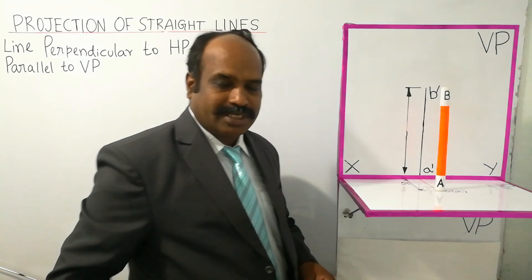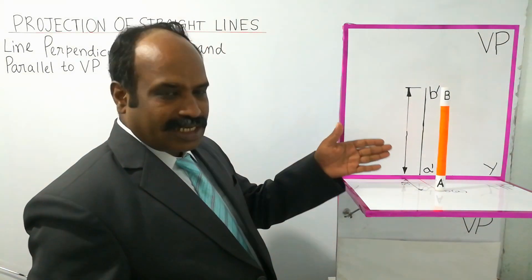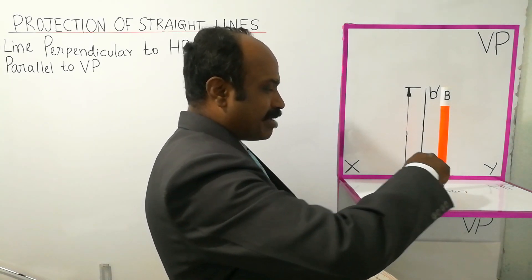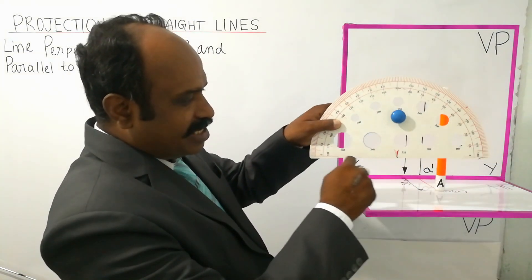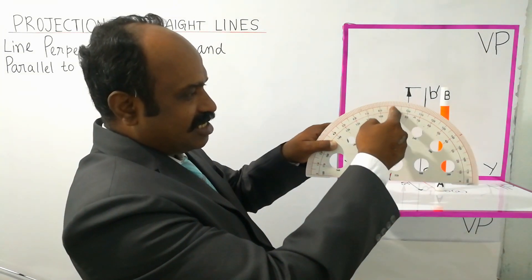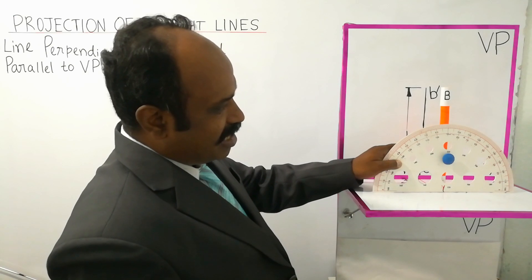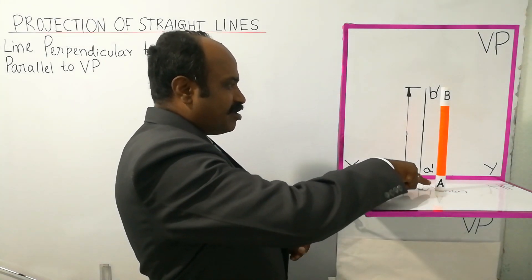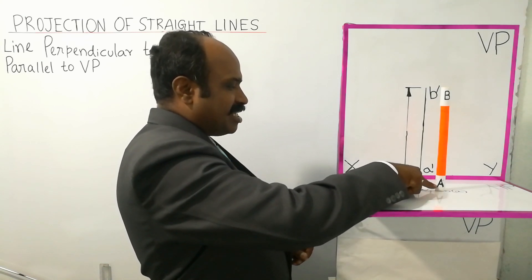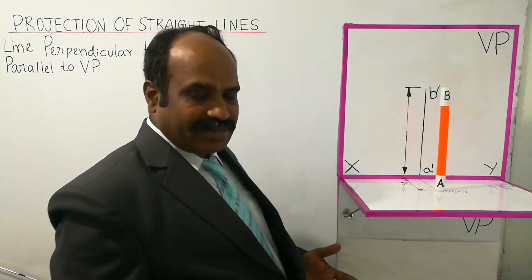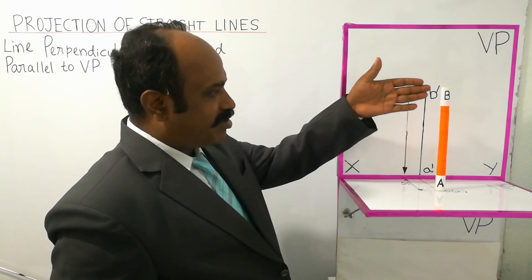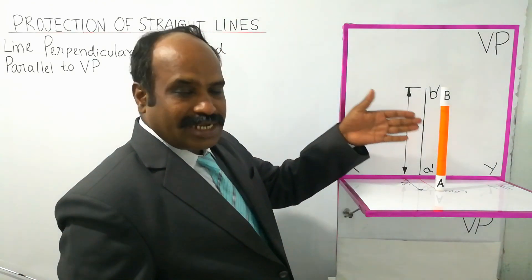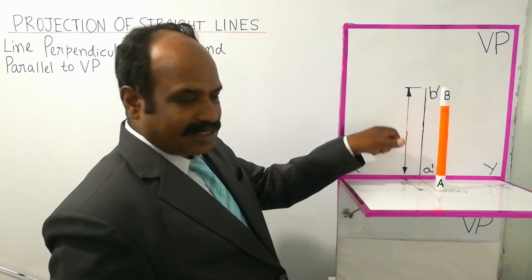The line is perpendicular to HP and parallel to VP. If it is perpendicular to HP, the line is vertical — 90 degrees. The vertical line is perpendicular to HP and parallel to VP. Point A is on VP. Consider a gap of 50mm in front of VP. The distance between the two end points is uniform since the line is parallel to VP.